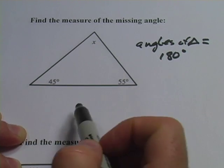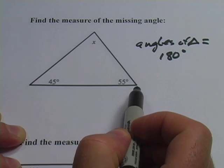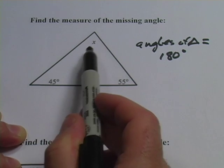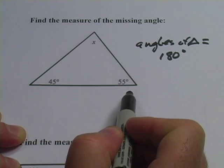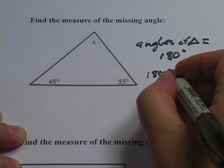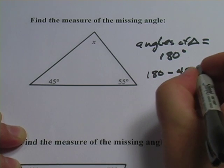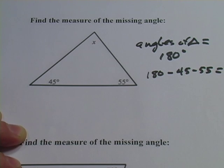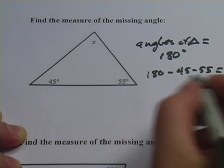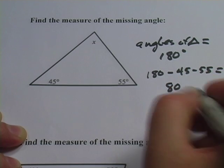So if you see a problem like this where you're given two angles and you're asked to find one angle, all you need to do is subtract both of those from 180. So I could write it like this, 180 minus 45 minus 55 equals, and that's what I would put into my calculator. I think if you punch that in, you're going to end up with 80 degrees.